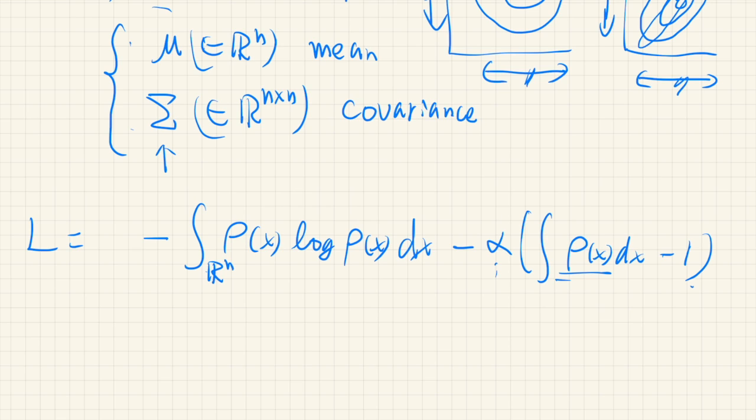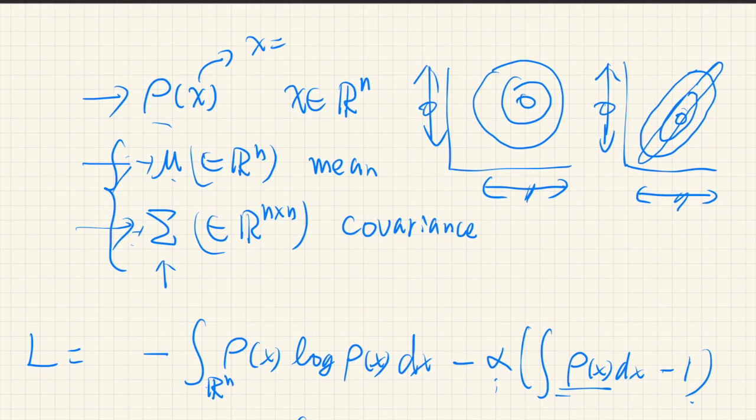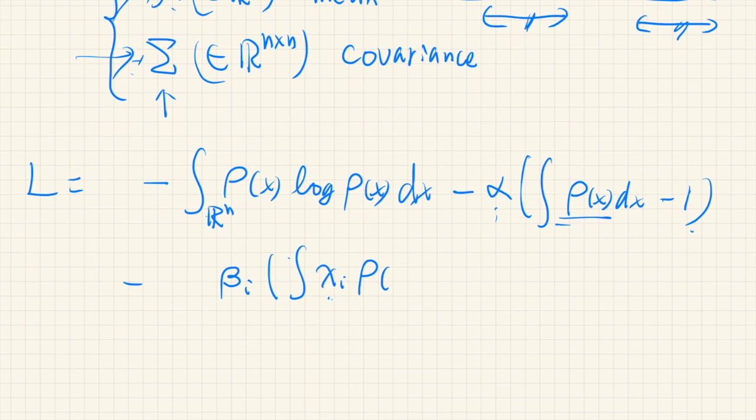Now we add these constraints, but we deal with each component of this vector or this matrix. So for that, we introduce β_i for each element of this μ. So that is x_i, the i-th component. So the mean of this component should be equal to the i-th element of μ, and we apply this constraint for each element, so we have to take the sum.